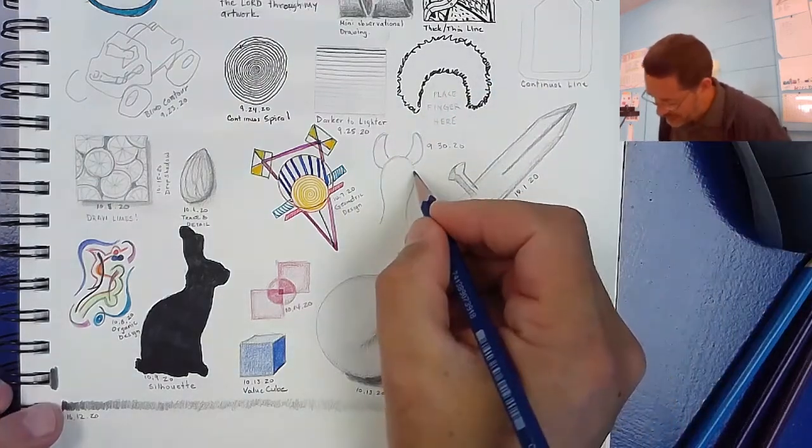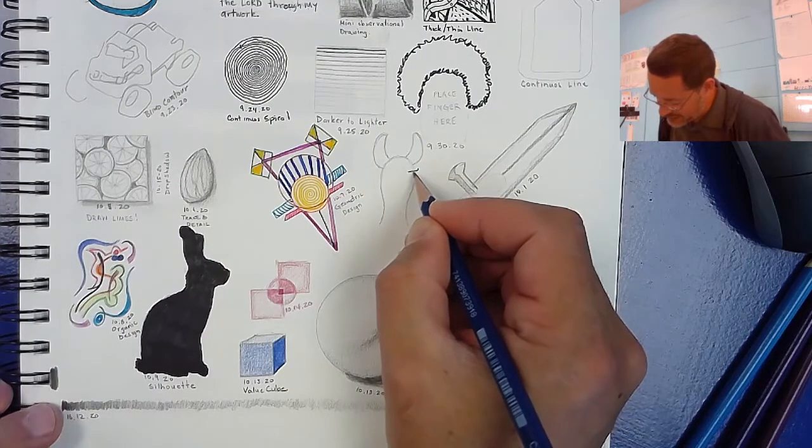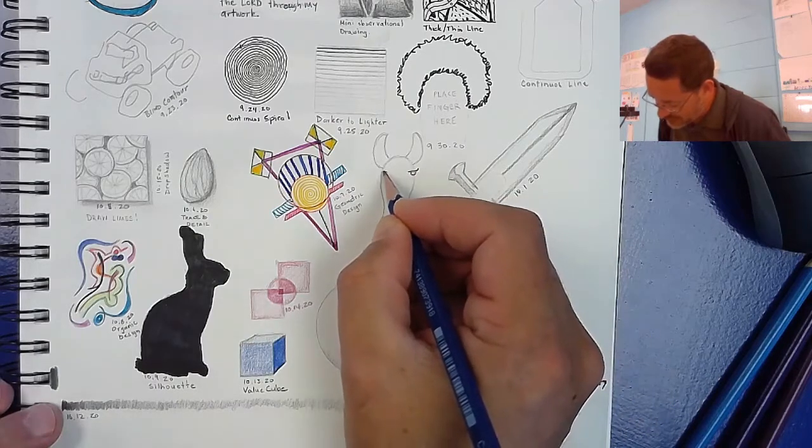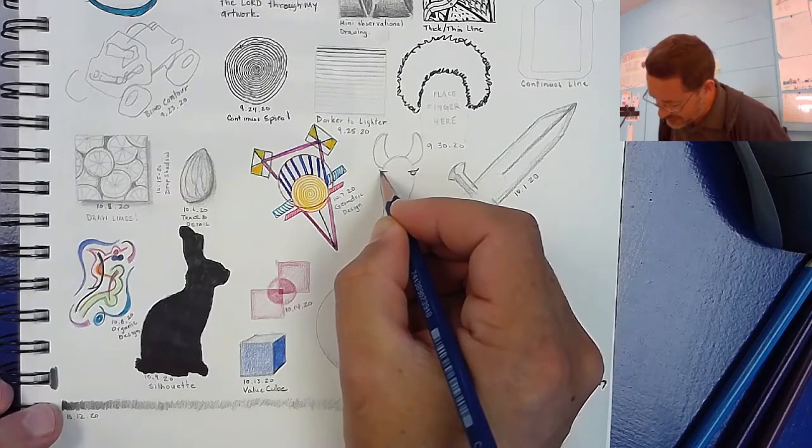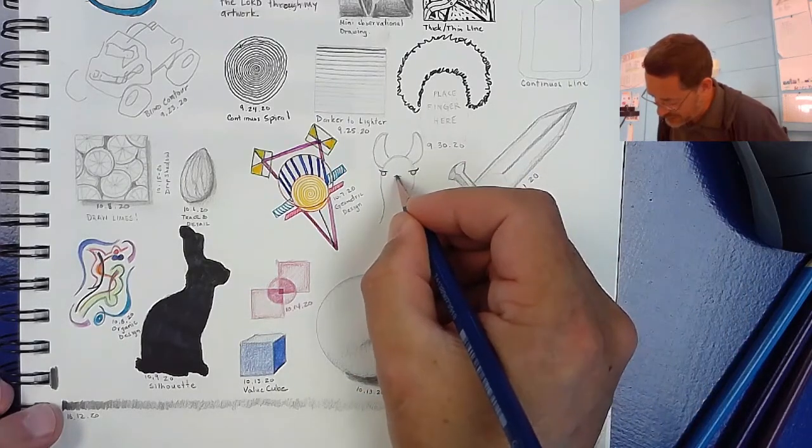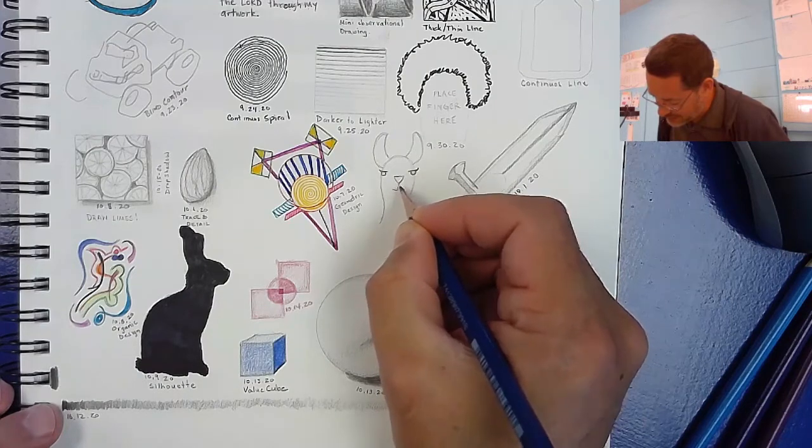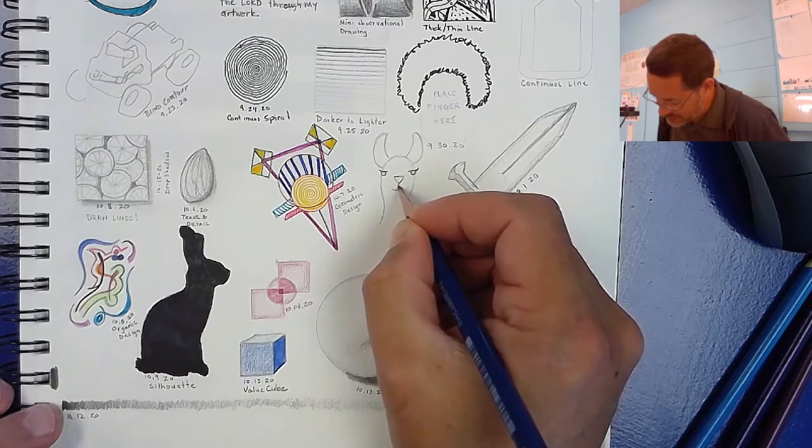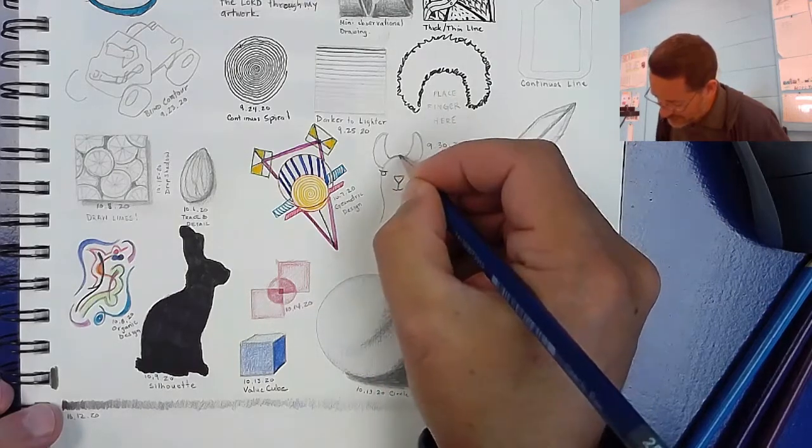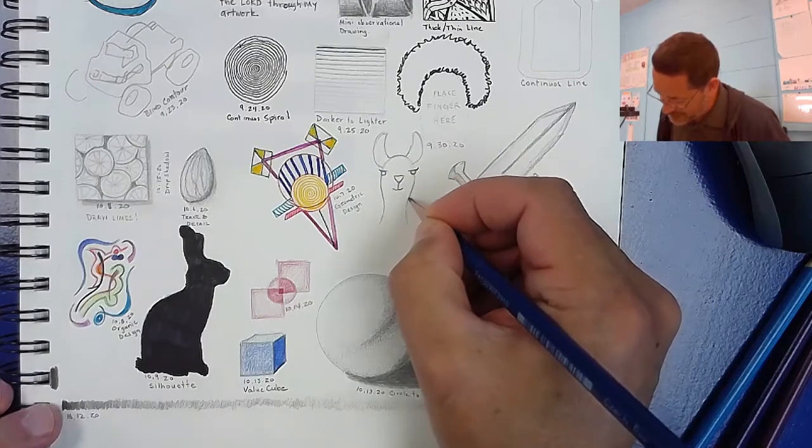Okay so there's the ears and you got to be careful to put the eyes way out on the side and they usually have eyelashes. Okay and then you got to put his nose up high, really simple, and then just this nice little mouth there. Okay so there's our no drama llama.